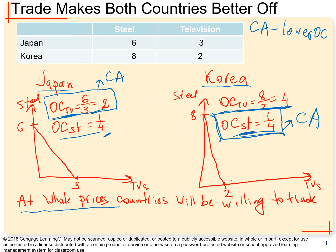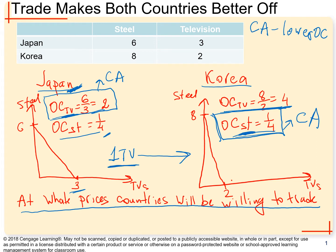Can we just set any price for one TV or one unit of steel, or should there be some kind of a range of prices? Let's suppose Japan produces three TVs and sends one to Korea. Korea has to pay Japan for this one TV in units of steel — we don't have currency in our simple model. So what is the minimum amount of units of steel Japan will be willing to accept? The answer is two units of steel.